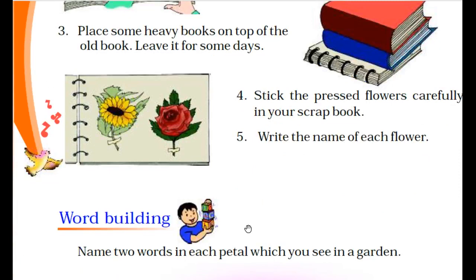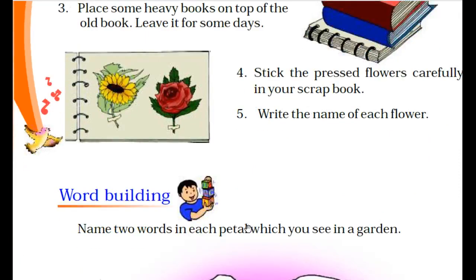After a few days, gently place heavy books on top again. Now, for the Word Building activity: name two words in each petal which you see in the garden. You have to write two words for each petal related to things you see in a garden.